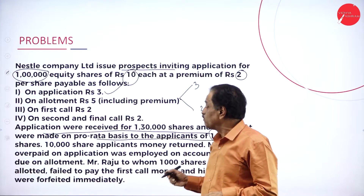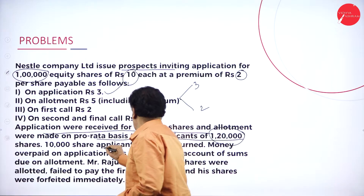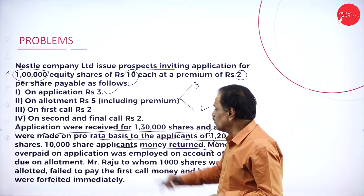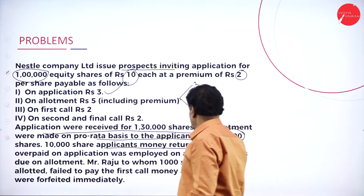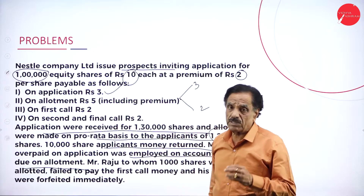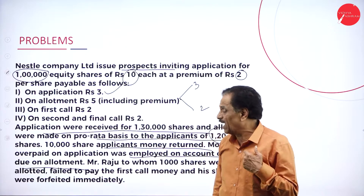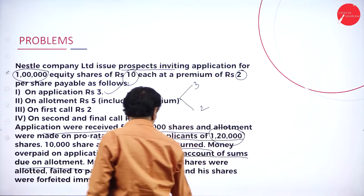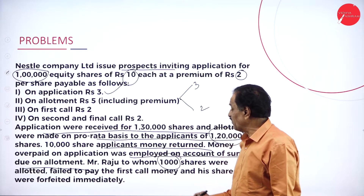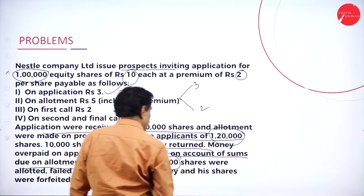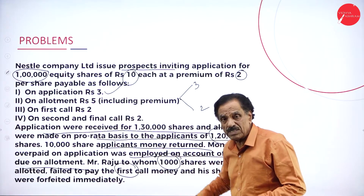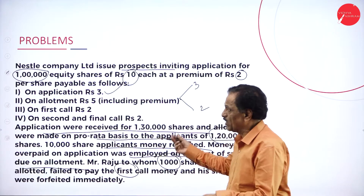10,000 shares' applicants' money was refunded. Money overpaid on application was adjusted on account of sums due on allotment. Whatever excess 20,000 comes, that is adjusted to allotment. Mr. Raju, to whom 1,000 shares were allotted, fails to pay the first call money, and his shares were forfeited immediately — no chance is given in the final call.